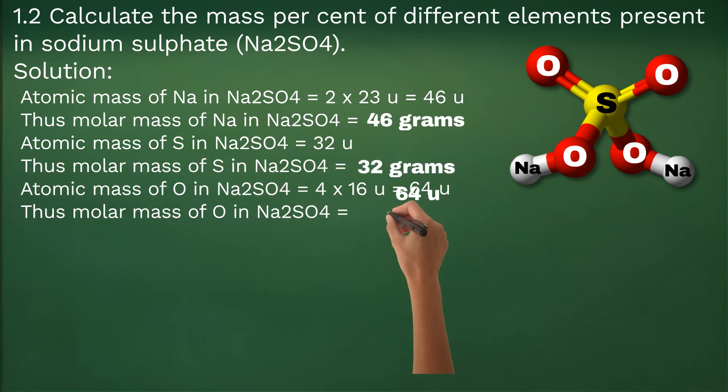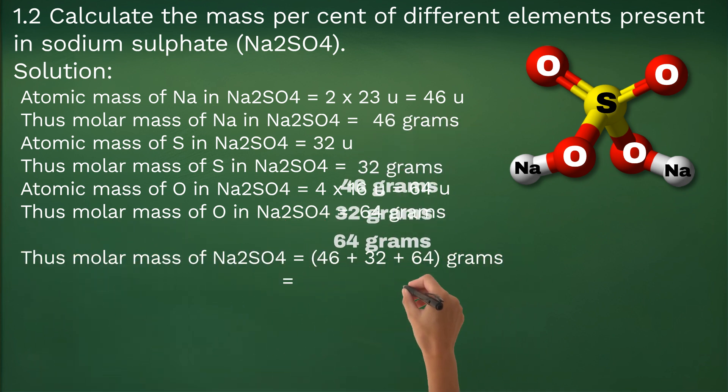Molar mass of Na2SO4 becomes the sum of the molar masses of the three components, which is 46 plus 32 plus 64 equals 142 grams.